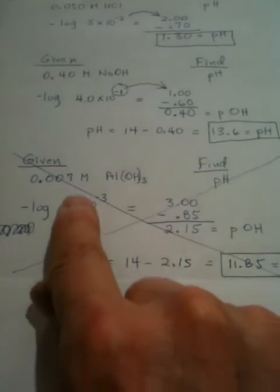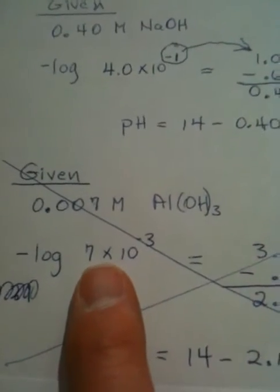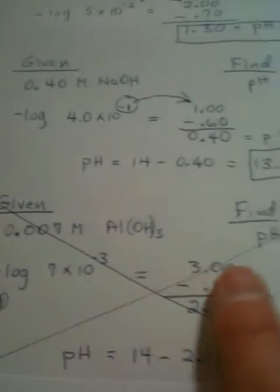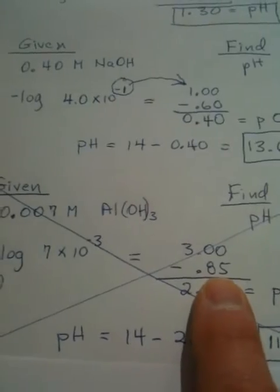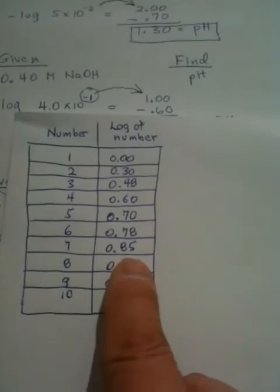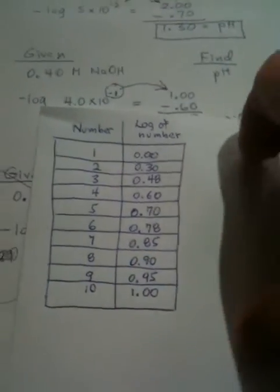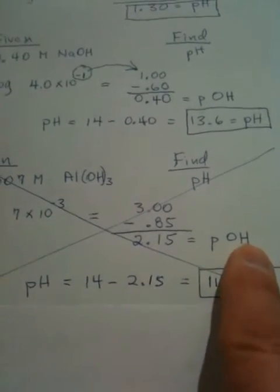They would take the minus log of this number as it is in scientific notation. They'd get the 3 from the minus 3, subtract the 0.85, which we get off the table when we look up 7. Let's see here, 0.85, and come up with 2.15, which is the pOH.